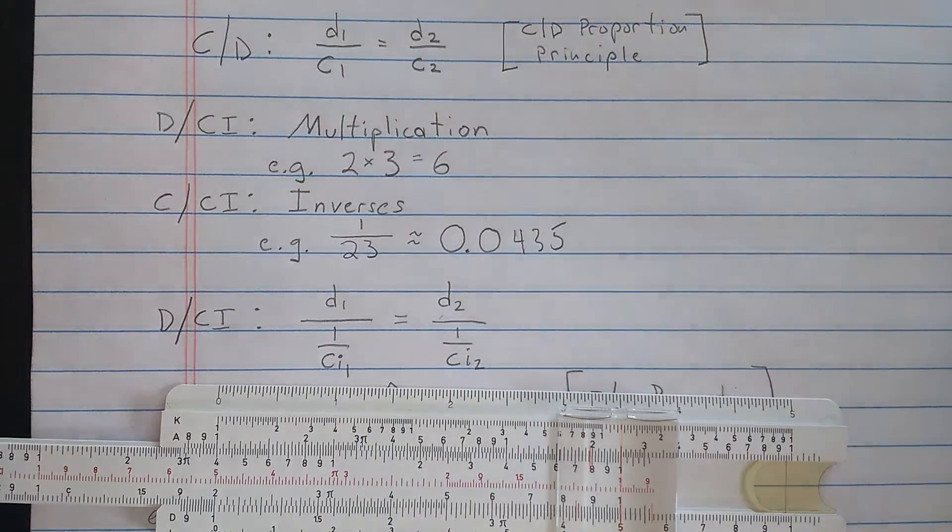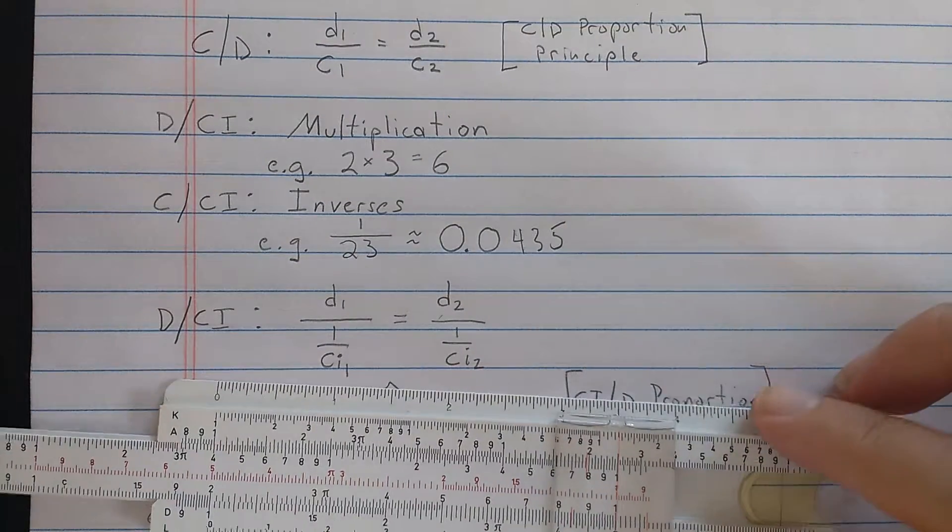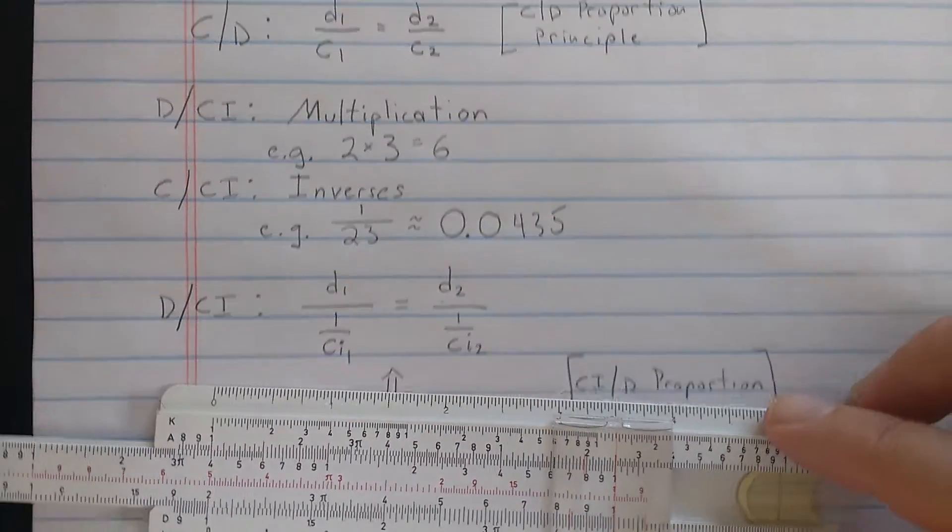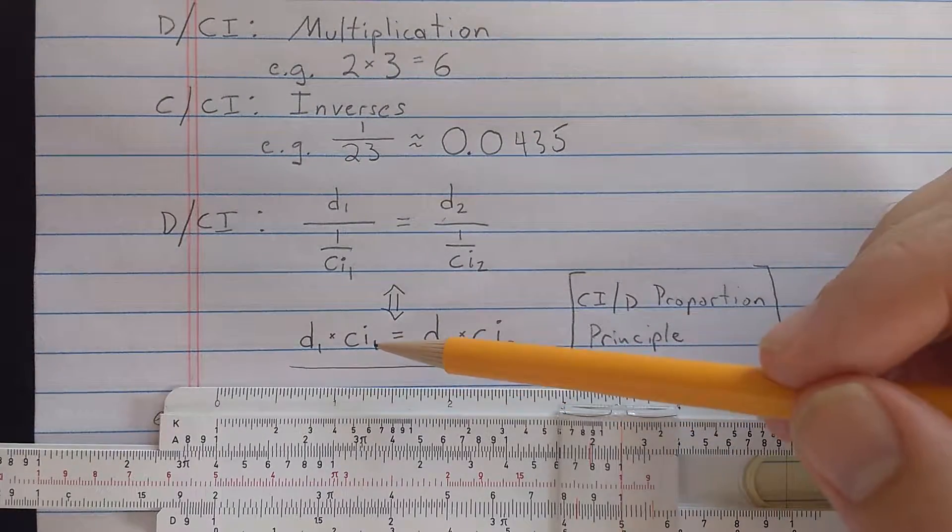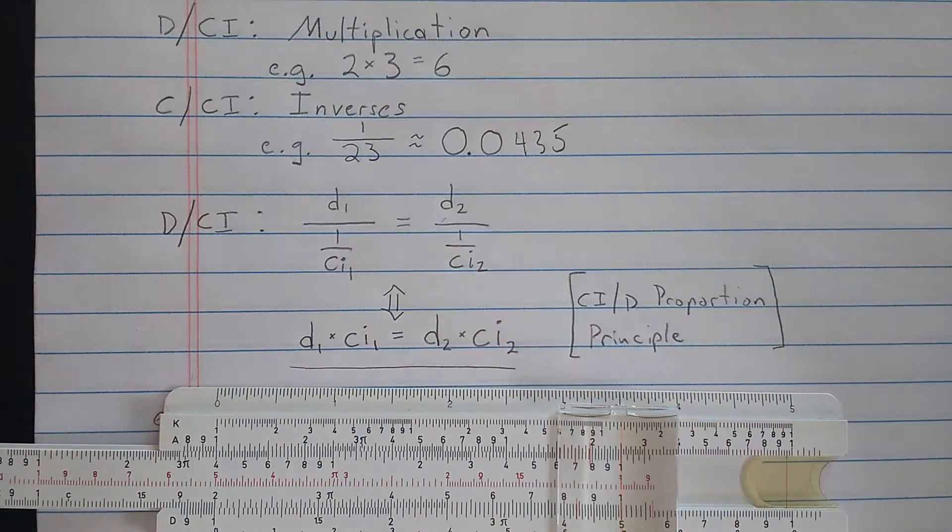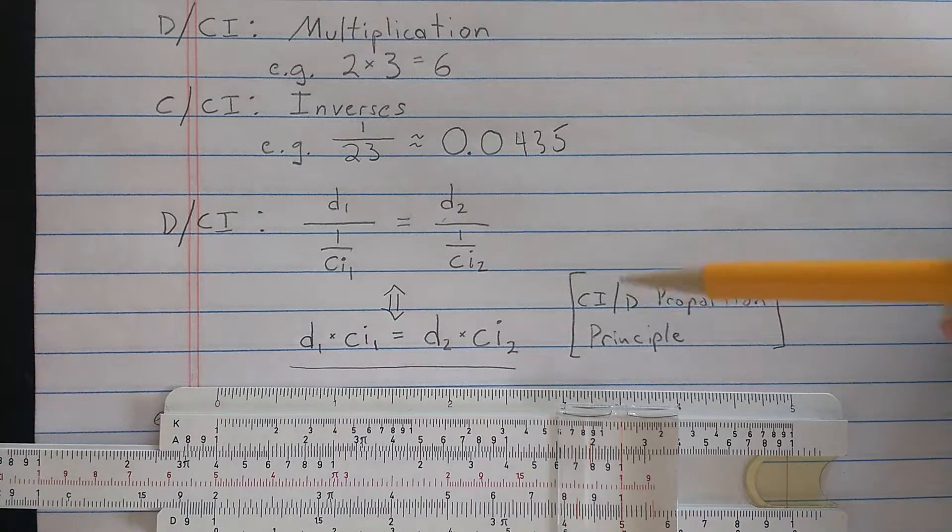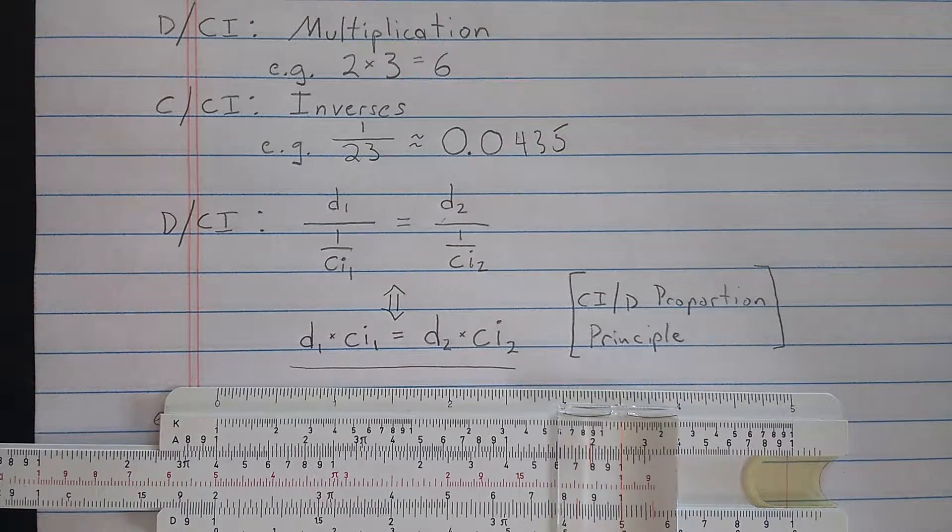So if I, instead of finding the number on the C scale, I find it on the CI scale, then I get its reciprocal. So here, I get this. But of course, we know from our knowledge of fractions that this is the same as saying D1 times CI1 equals D2 times CI2.